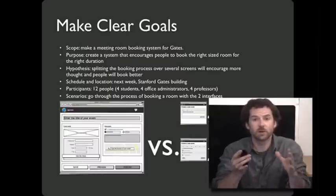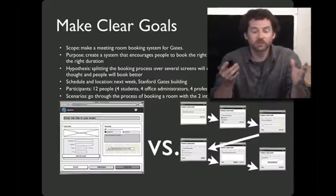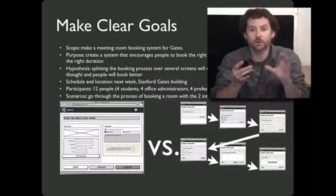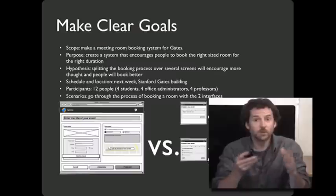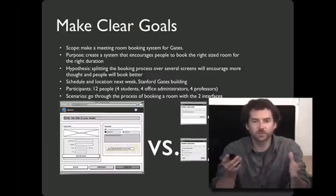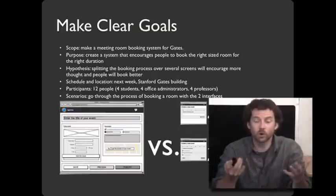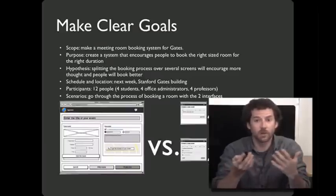The first step is to make clear goals. For example, say you were building a room reservation system for a computer science department. One strategy would be to put all the information on one page; another strategy would put different pieces on different pages. You might be particularly interested in whether splitting things up changes whether people will book a right-sized room. So before running your study, lay out its scope. I encourage you to come up with a hypothesis ahead of time and figure out a way to know whether your hypothesis is true or not.